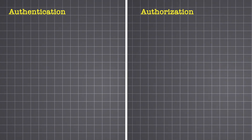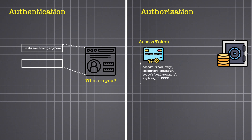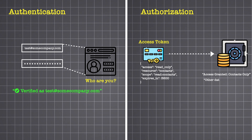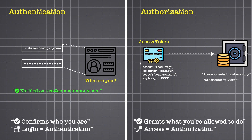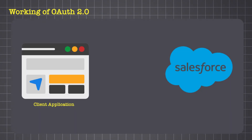It's important to note that OAuth 2.0 is not an authentication protocol — it doesn't tell you who the user is. It simply says 'this app has permissions to act on this user's behalf.' It's all about authorization, which is granting specific access to specific data. So how does OAuth 2.0 actually work? Imagine a user wants a third-party app to access their Salesforce data.